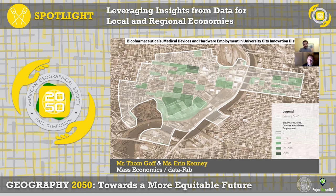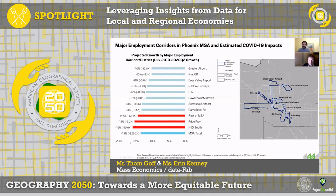You can also nest firm-level data within slightly more custom geographies — in this case, an innovation district in Philadelphia. Lastly, when you combine the QCW firm-level data with projections, you can develop a bit of a crystal ball into the performance of cities, corridors, and neighborhoods, as we did in a project in Phoenix.